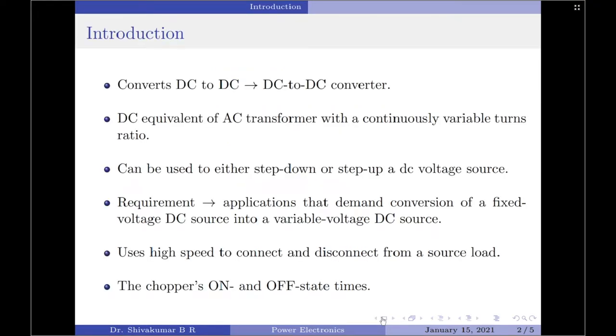A chopper is a power converter that converts DC to DC. Hence, it is also commonly known as DC to DC converter. In simple words, you can imagine it as DC equivalent of an AC transformer with a continuously variable turns ratio.